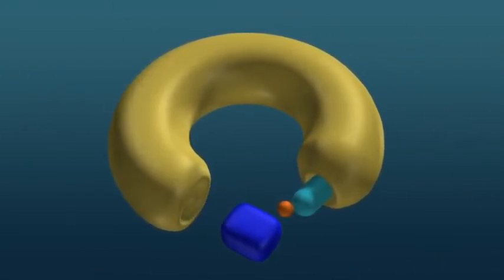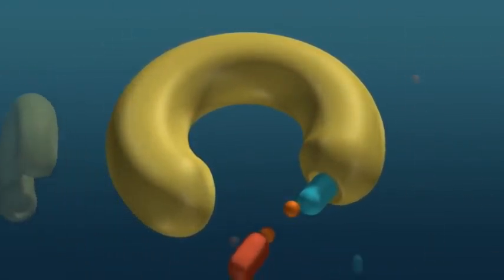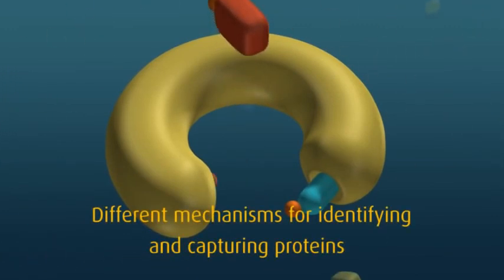Looking at the E3 enzyme more closely, we can see that it's a complex structure which may have different mechanisms for identifying and capturing different target protein substrates.